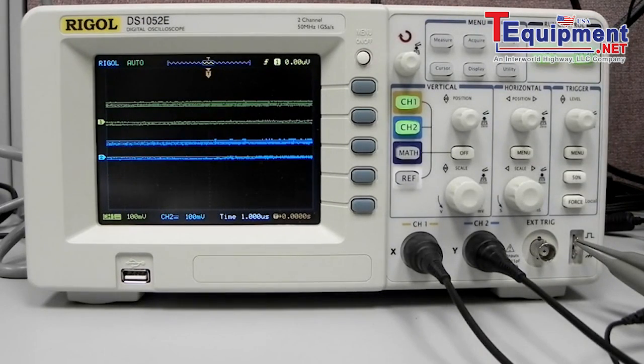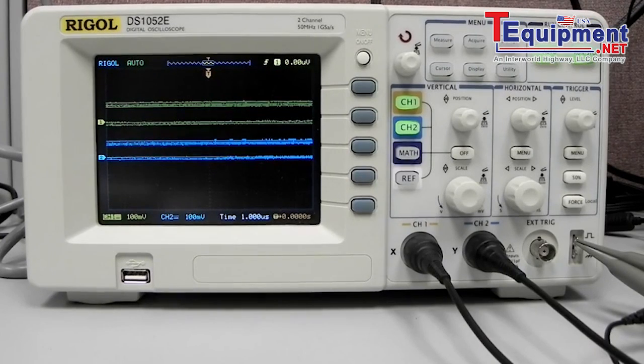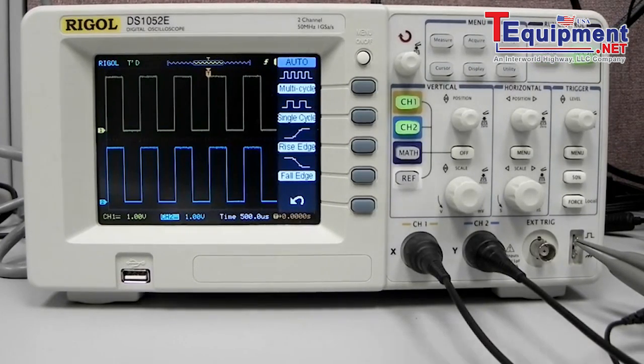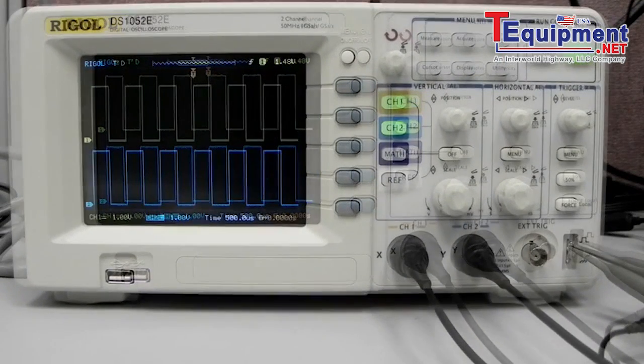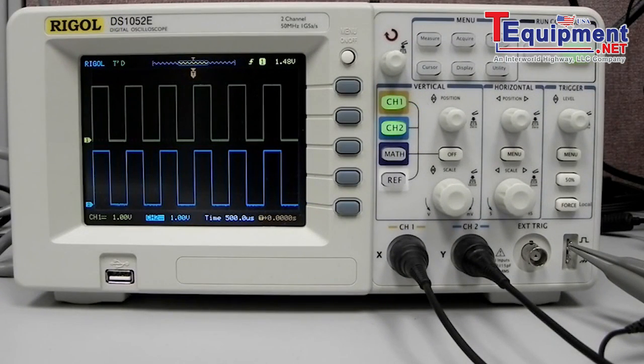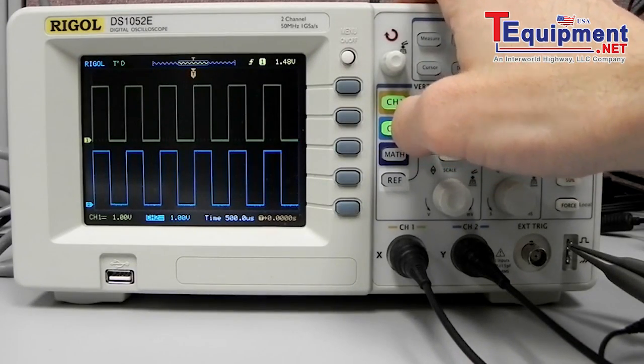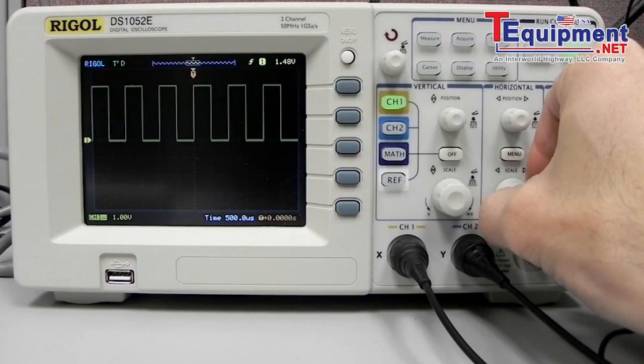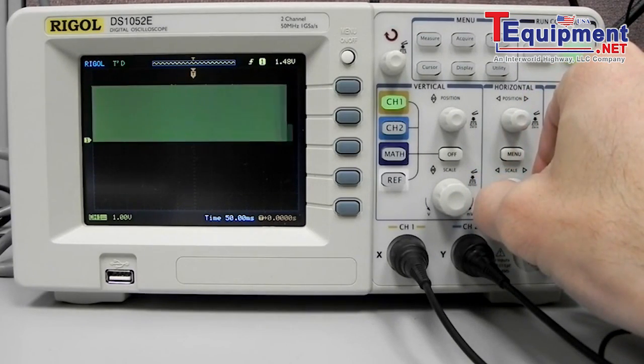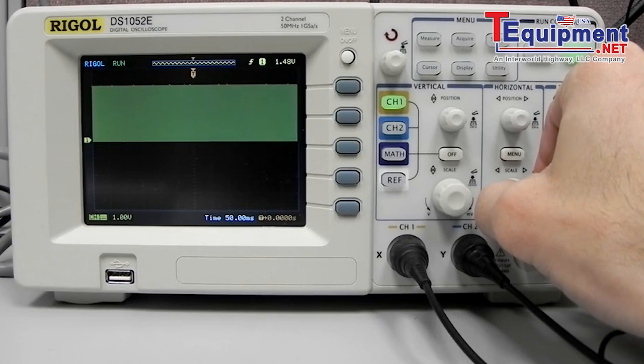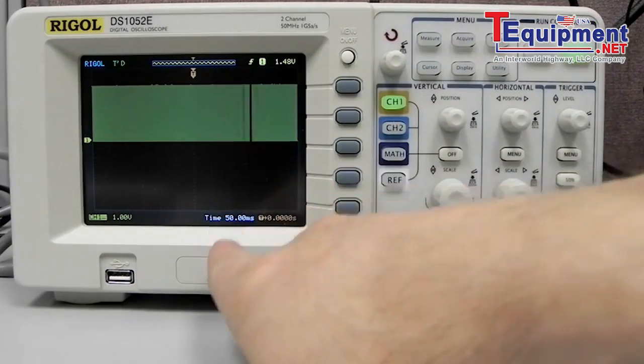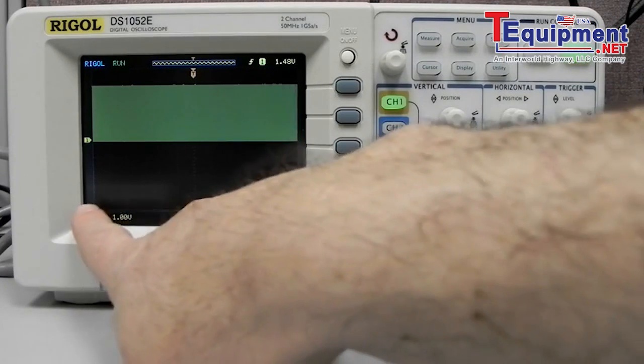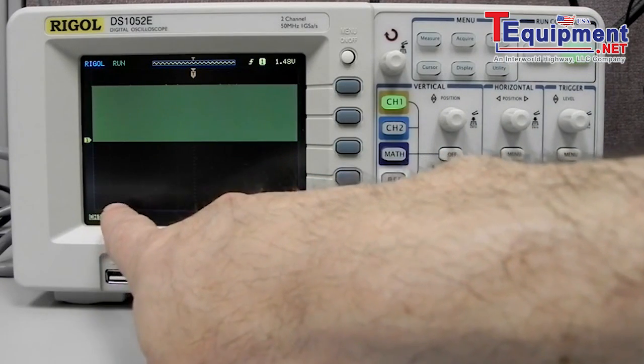We're going to reconnect here and we'll get back into auto. Now let's look at the sampling and memory features that we have available with this particular scope. We're going to shut down channel two and increase the time scale here. We're going to bring it to 50 milliseconds per time division.